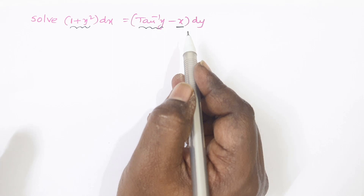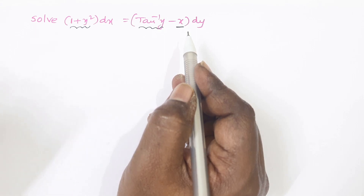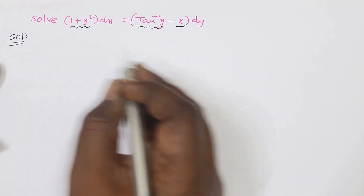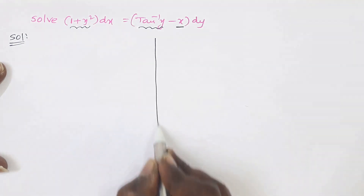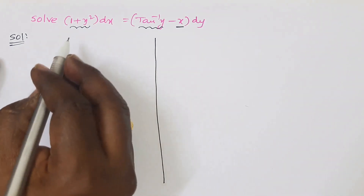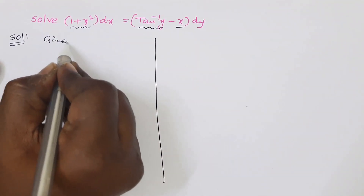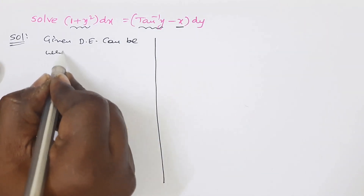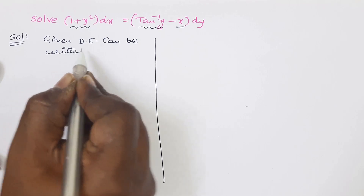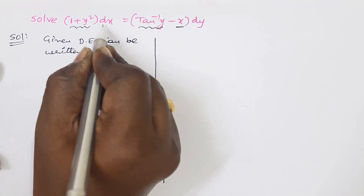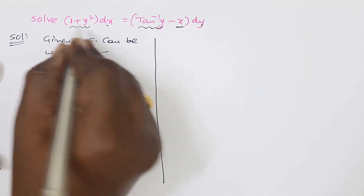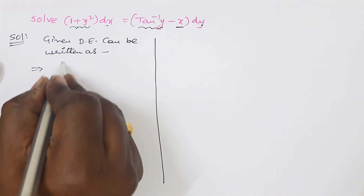This is the linear differential equation in x. Now we will solve a problem. The given differential equation can be rewritten by moving dx to the denominator on the left side, and moving 1 plus y squared to the right side denominator.